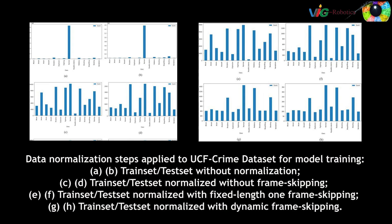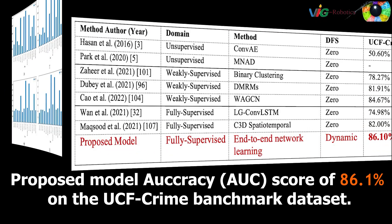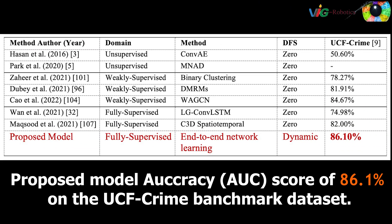The model has achieved the highest performance of 86.1% in terms of AUC, as compared to all previously reported results in the domain of unsupervised, weakly supervised, and fully supervised approaches for the task of anomaly detection in surveillance videos.